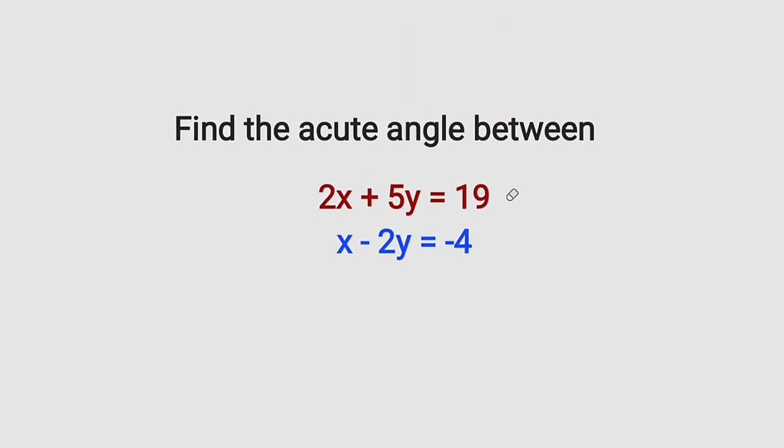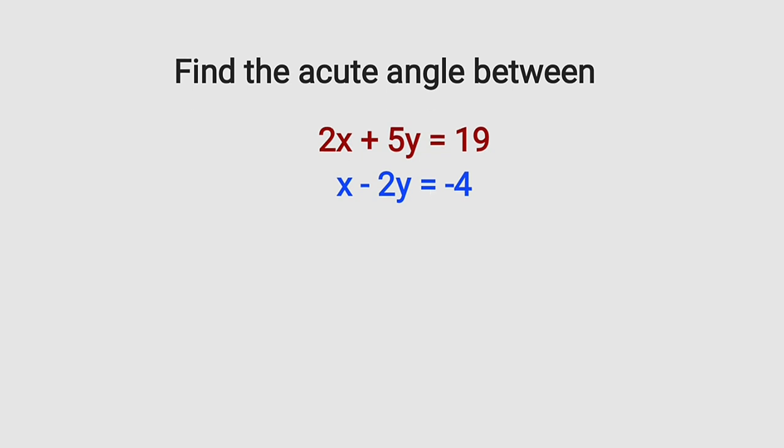We want to find the gradient of the first and the second equations. Let me start from the first one. The first one is 2x plus 5y equal to 19. To find the gradient, we can make y the subject. So by taking 2x to the right-hand side,